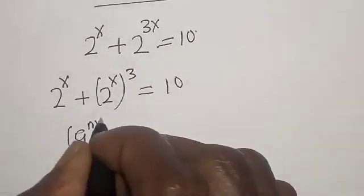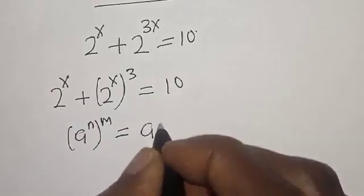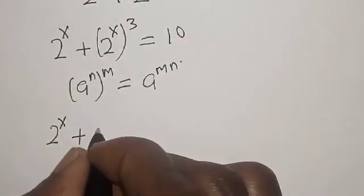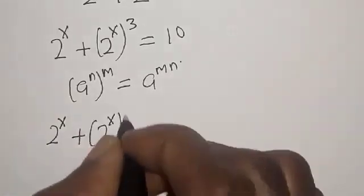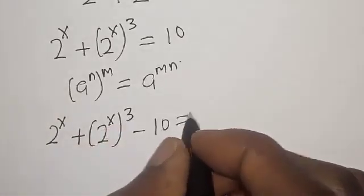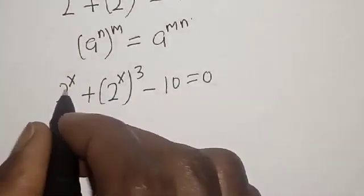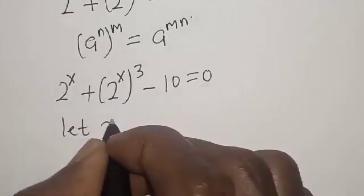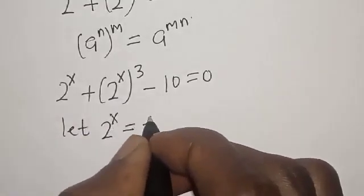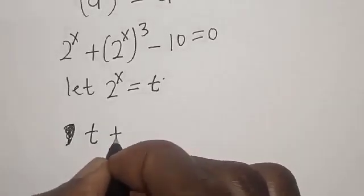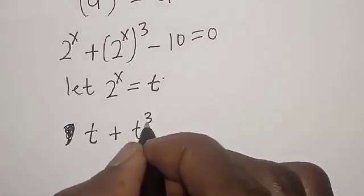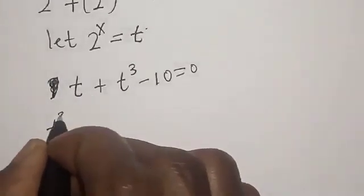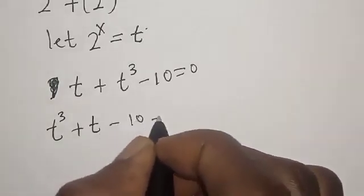Using the rule that a raised to power n raised to power m equals a raised to power mn, we rewrite: 2 raised to power x plus 2 raised to power x raised to power 3, minus 10, is equal to 0. Let 2 raised to power x equal t. Then t plus t raised to power 3 minus 10 is equal to 0.